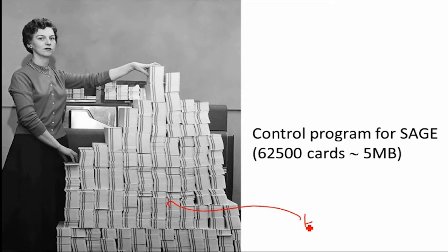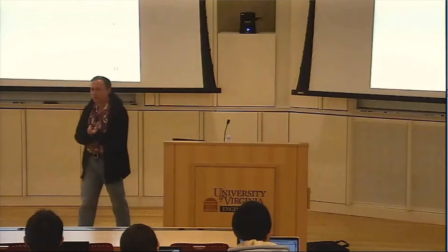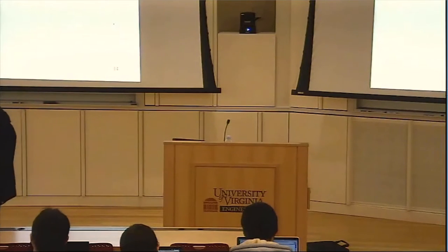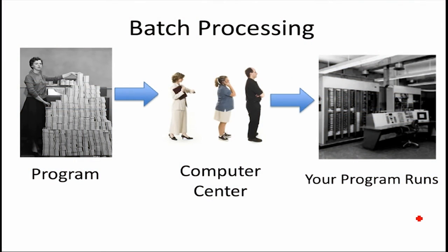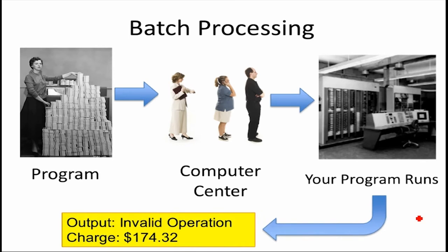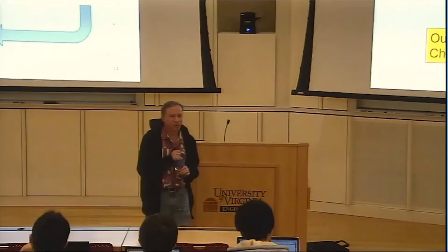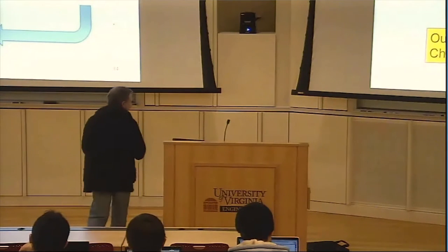The old way of running programs through the 50s was batch processing. You would take your program — your big stack of index cards or paper tape — to the computer center, wait in line, and your program would run and you'd get the output, which might be a failure because of some hanging chad, and you'd get a bill. What's the biggest problem with this model? Back in 1950, programmers were cheap and computers were expensive — pretty much the opposite of today.